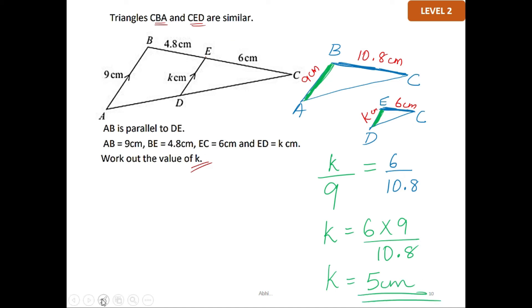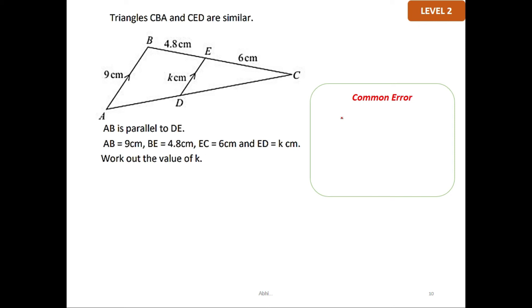Now, if you are really good at visualizing, you don't want to draw the triangles separately. You can just mark them here. K is the side that corresponds to the smaller triangle, and you have 9 here for the bigger triangle's corresponding side. And you have EC 6 as the side in the smaller triangle, which has the corresponding side BC. Make sure you add them because your length should be 6 plus 4.8, which is 10.8 cm.